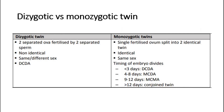For dizygotic twins, there are two separated ova fertilized by two separated sperm. For monozygotic twins, it is a single fertilized ovum which later splits into two identical twins. Monozygotic twins will be identical, whereas dizygotic twins will be non-identical. Dizygotic twins can be the same sex or different sex, whereas monozygotic twins are always the same sex, either both males or both females.